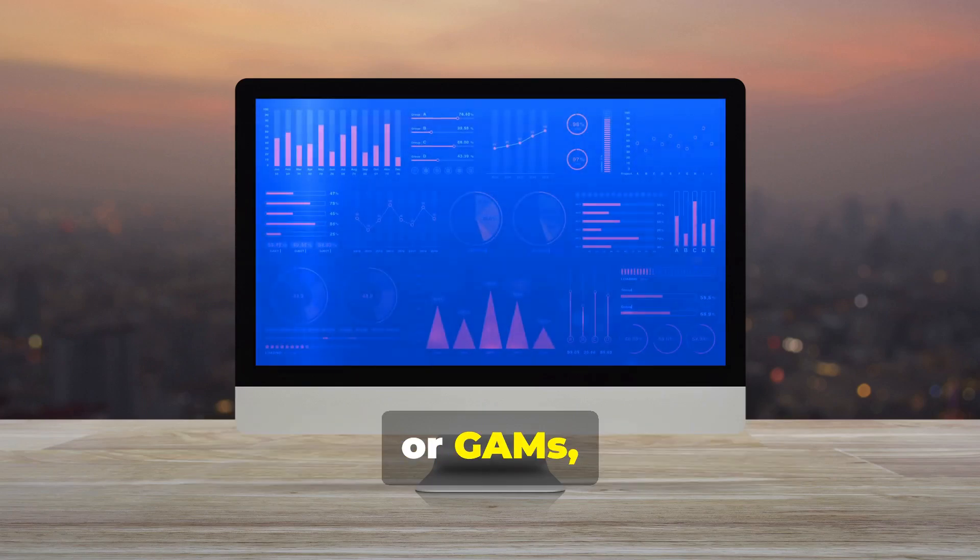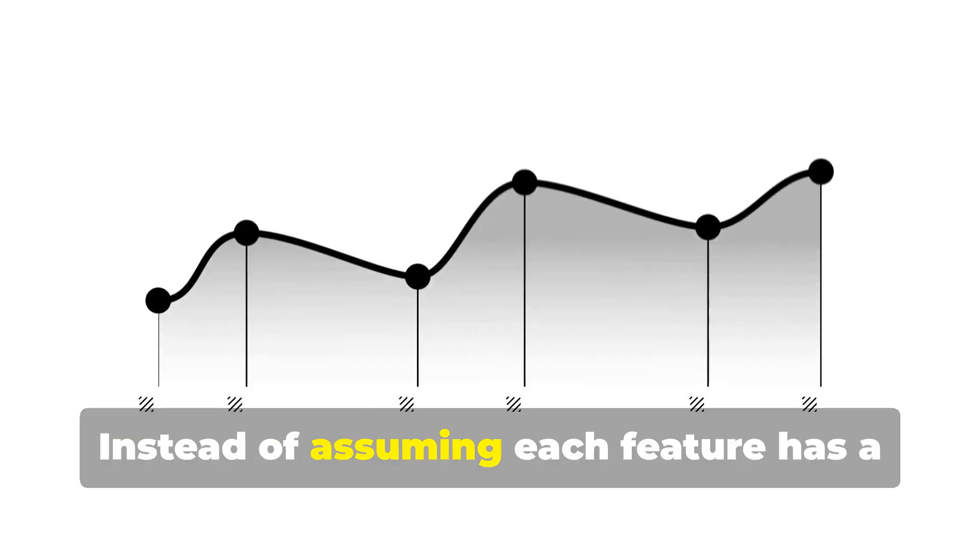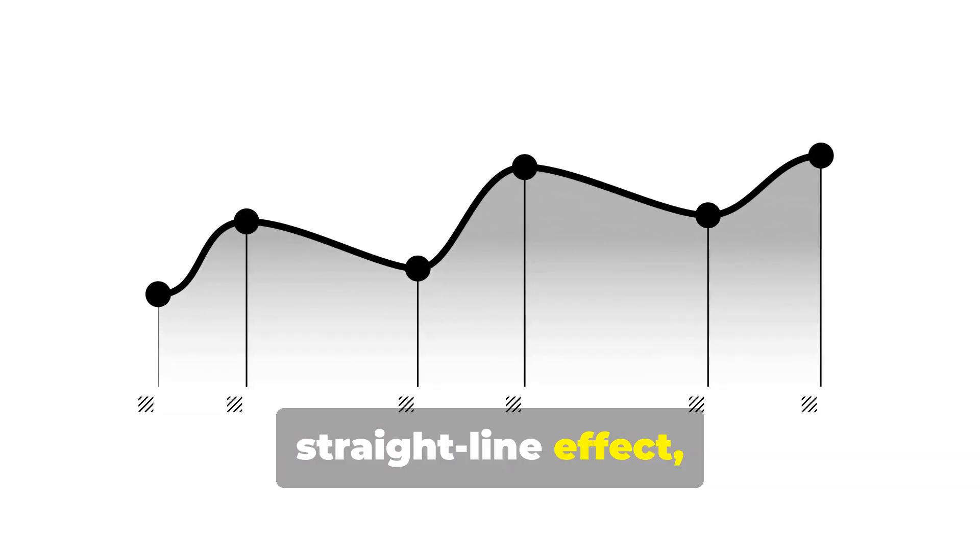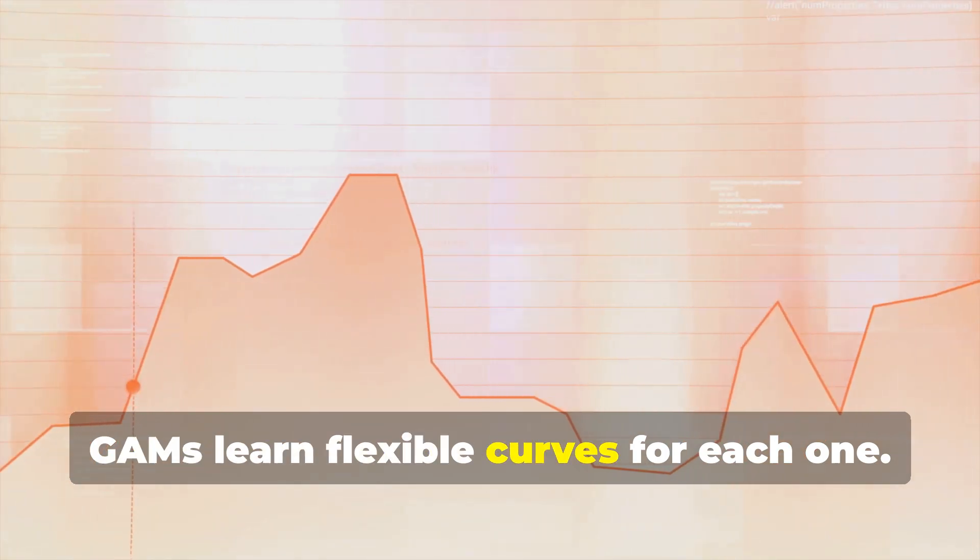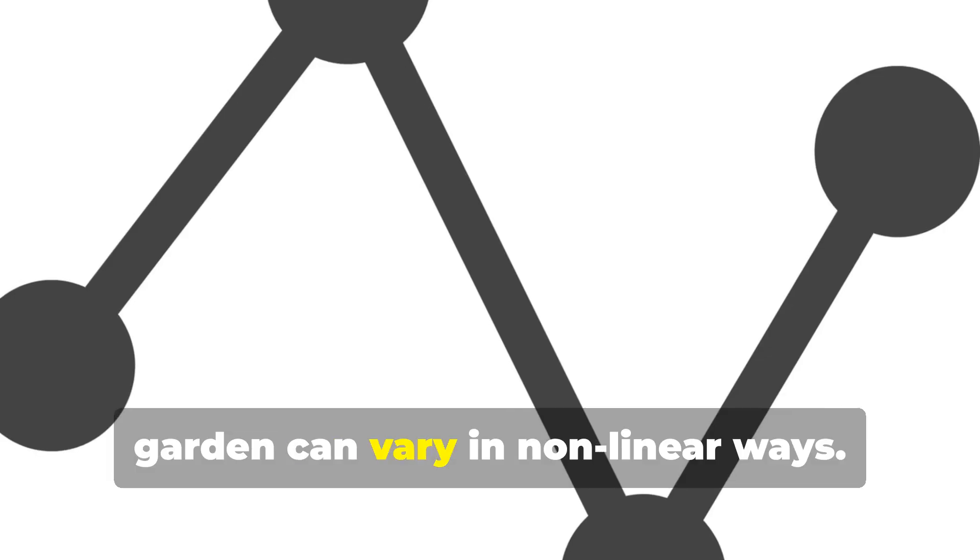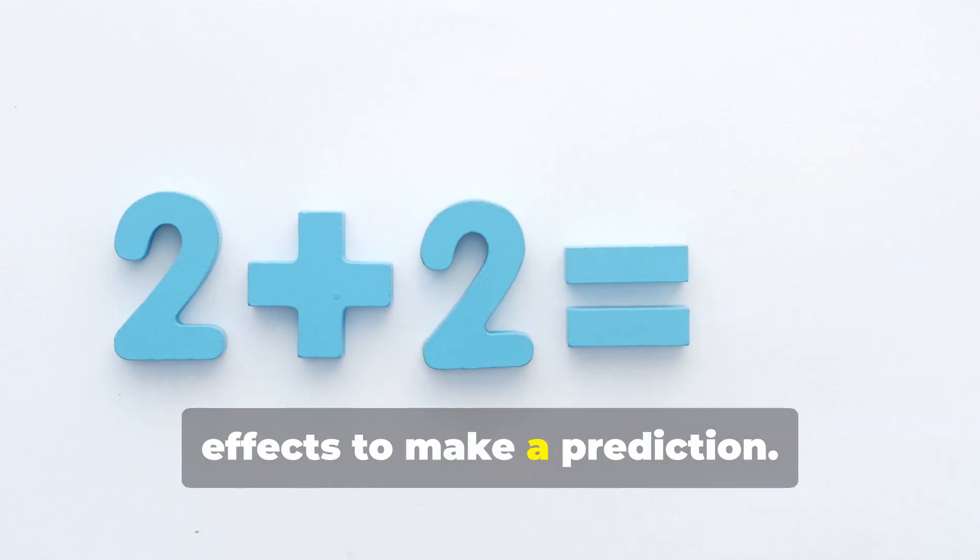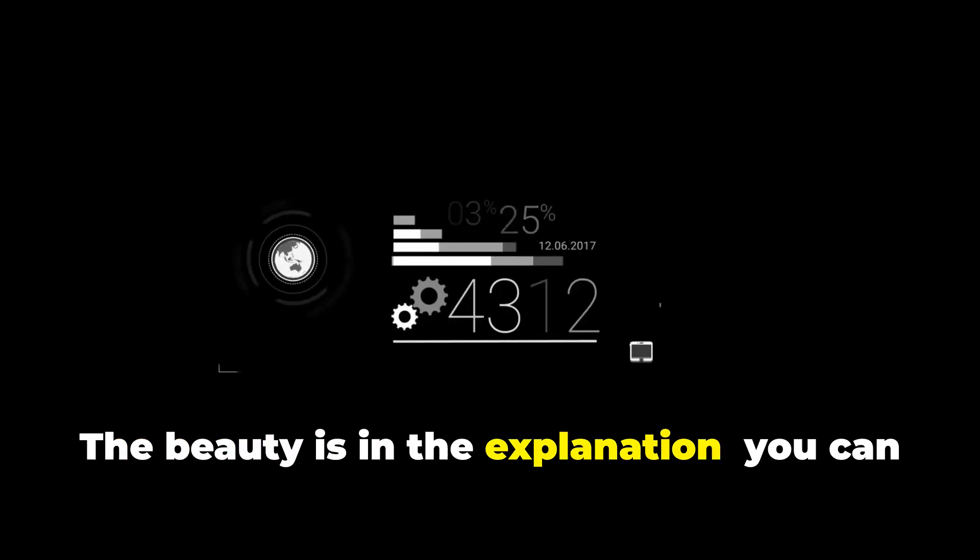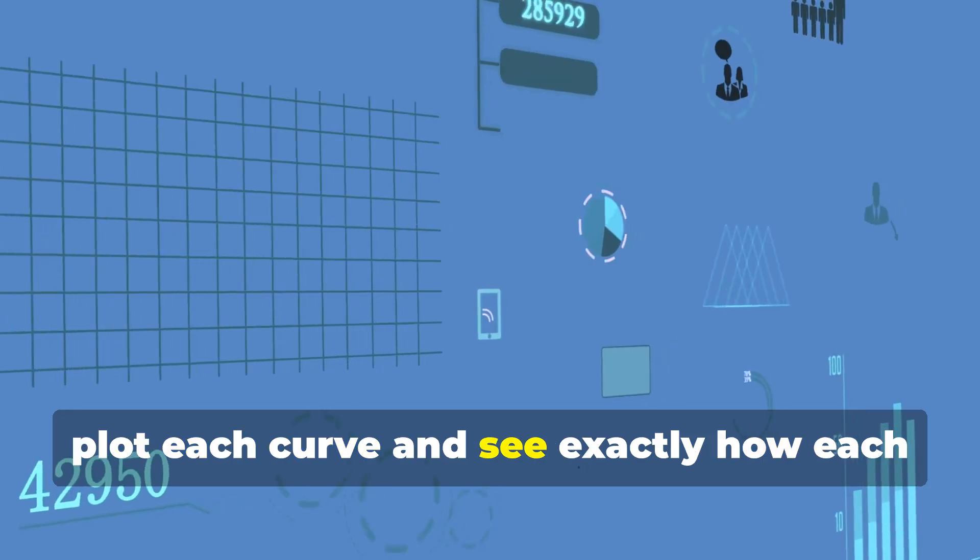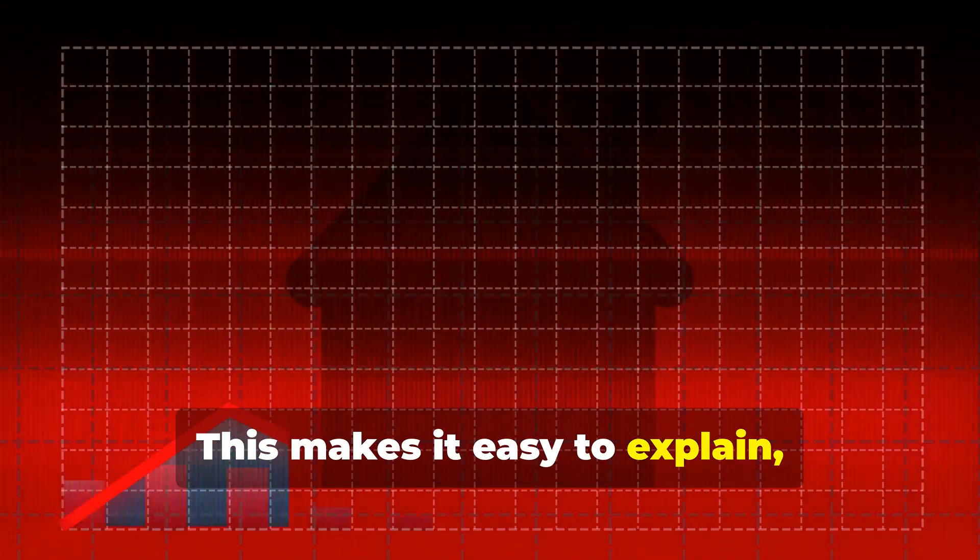Generalized additive models, or GAMs, bridge the gap between simple and complex models. Instead of assuming each feature has a straight-line effect, GAMs learn flexible curves for each one. For example, the value of an extra bedroom or a bigger garden can vary in non-linear ways. The model adds up these individual effects to make a prediction. The beauty is in the explanation. You can plot each curve and see exactly how each feature influences the outcome. This makes it easy to explain, say, how garden size affects house price.